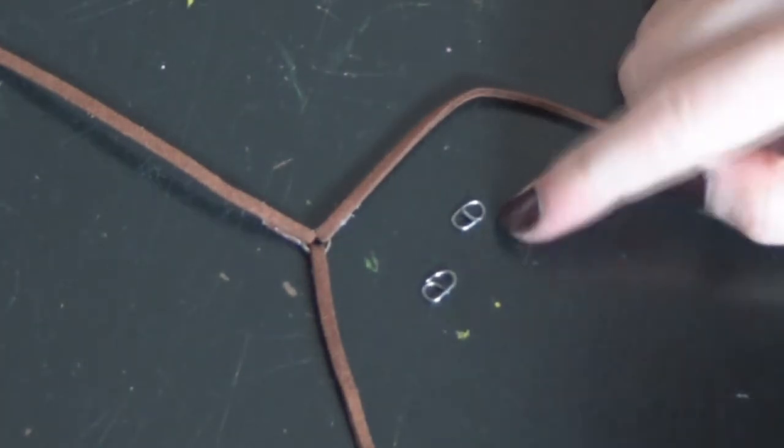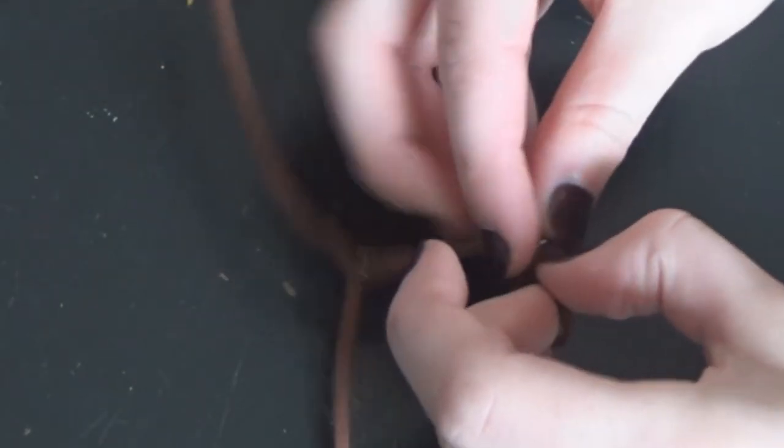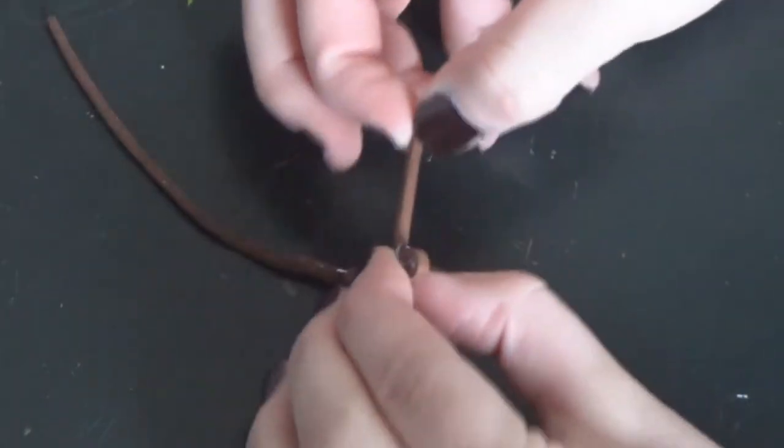Once you have your two buckles finished, all you have to do is thread them onto the pieces of leather that will be attaching to the saddle. So just thread them on like that.